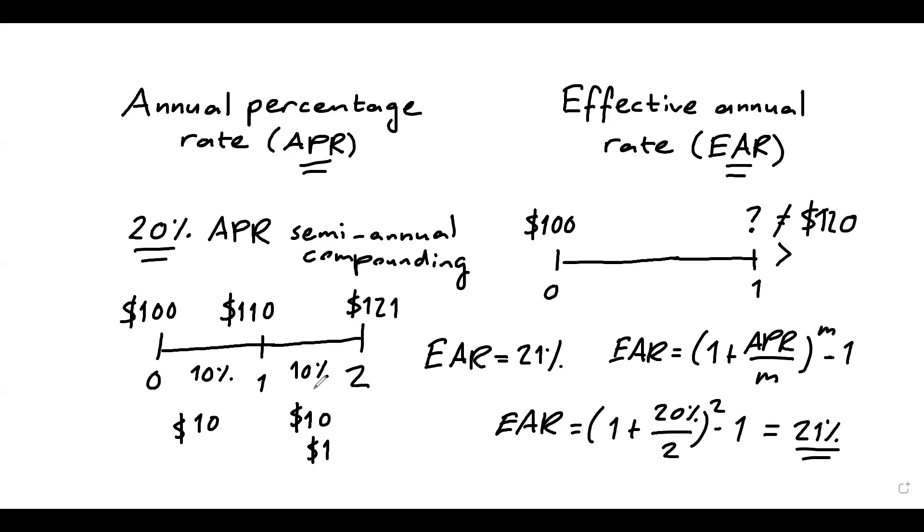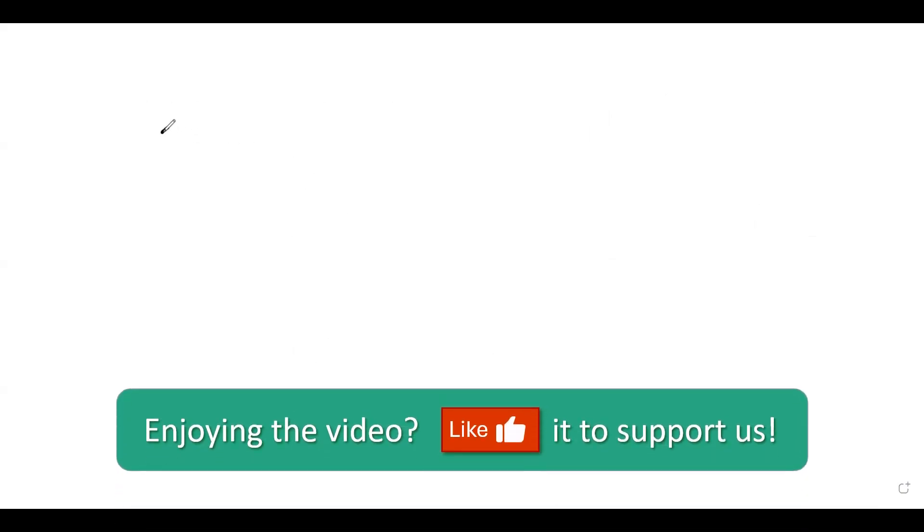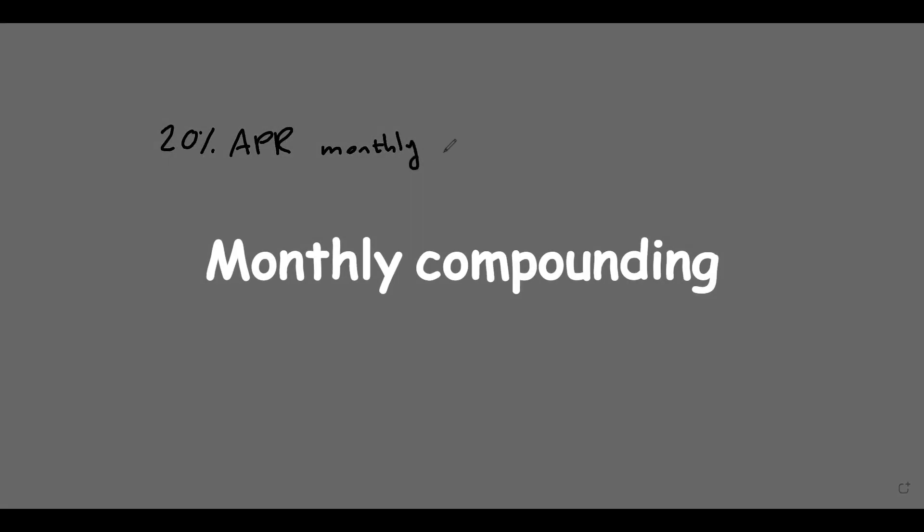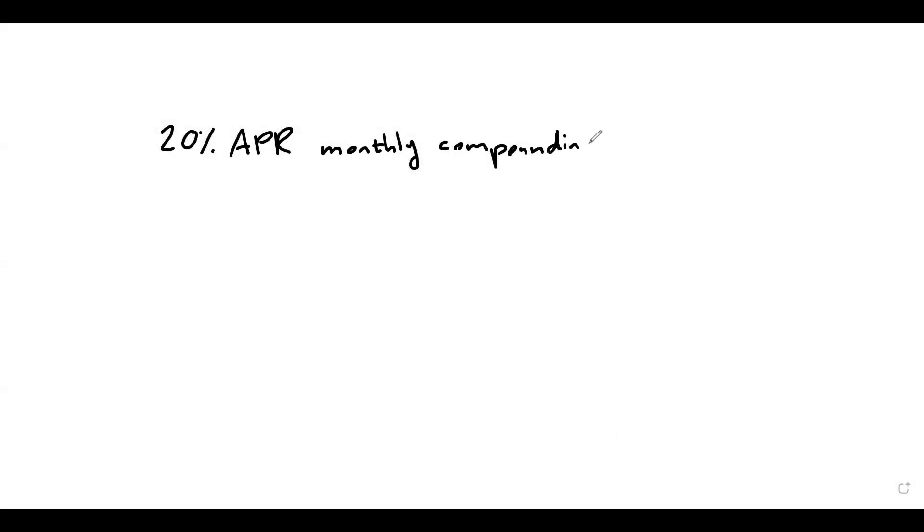Now let me show you another example. So for example, what if we have monthly compounding frequency? So again, let's say we have a quote of 20% APR, but now we have monthly compounding. You can still use the same formula, but let's see that on our timeline as well.